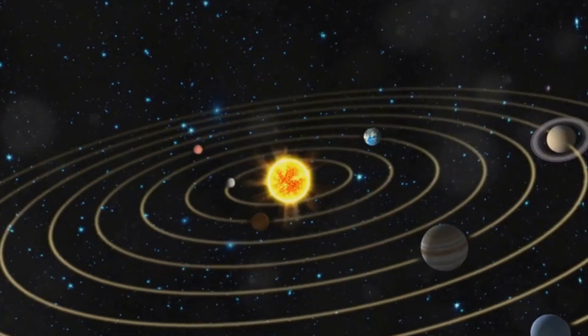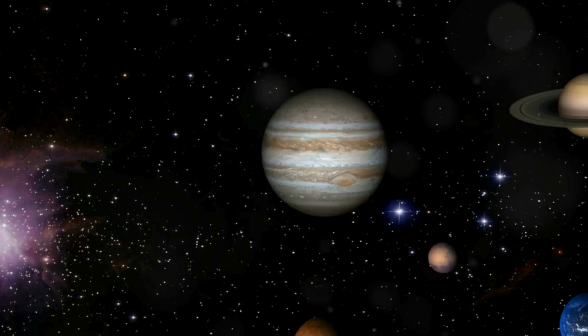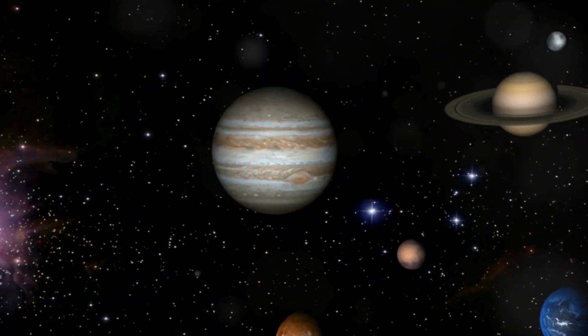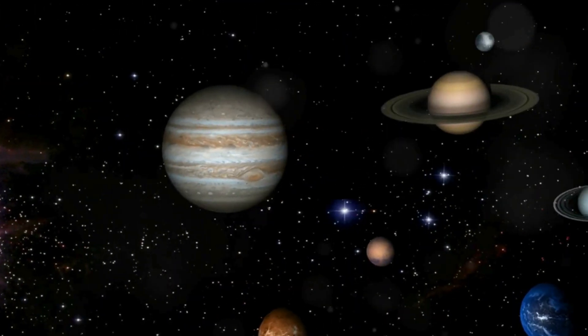As we traverse the cosmos, we'll realize that each planet paints a different picture of solar eclipses, shaped by their unique characteristics and moons.